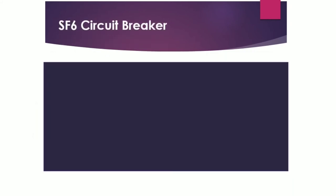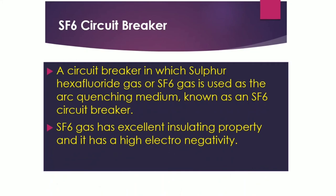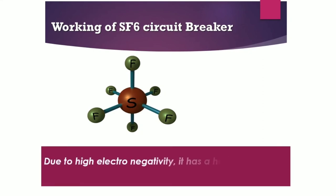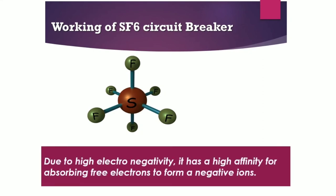The SF6 circuit breaker uses sulfur hexafluoride (SF6) gas as the arc-quenching medium. We use SF6 in this application because it has excellent insulating properties and high electronegativity. Due to its high electronegativity, SF6 gas has a high affinity for absorbing free electrons to form negative ions, which rapidly quenches the arc.